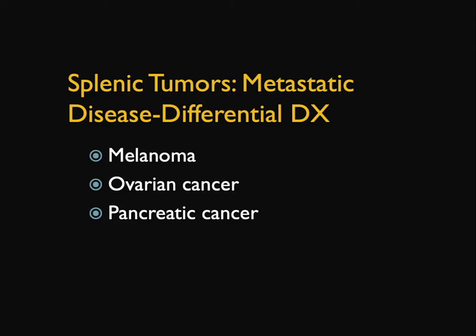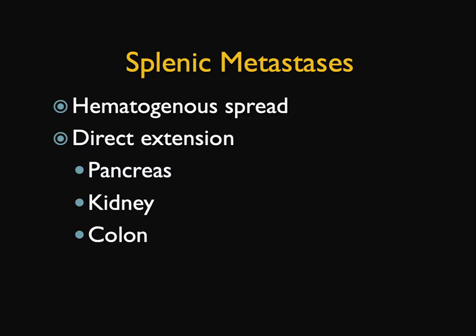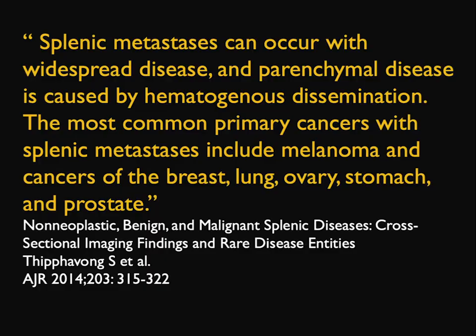Lymphoma and angiosarcomas are primary tumors, but metastases are more common. Think melanoma, ovarian cancer, and pancreatic cancer. Hematogenous spread and direct extension — direct extension from pancreas, kidney, colon; hematogenous is going to be something like melanoma. Splenic mets can occur with widespread disease. Most common primaries include melanoma, breast, lung, ovary, stomach, and prostate.